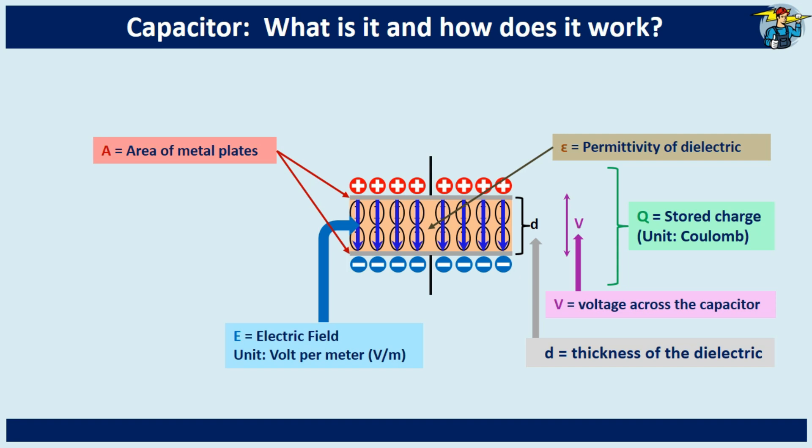Further, electric field inside of the dielectric can be derived from the given equation. So the electric field equals voltage across the capacitor divided by thickness of the dielectric.